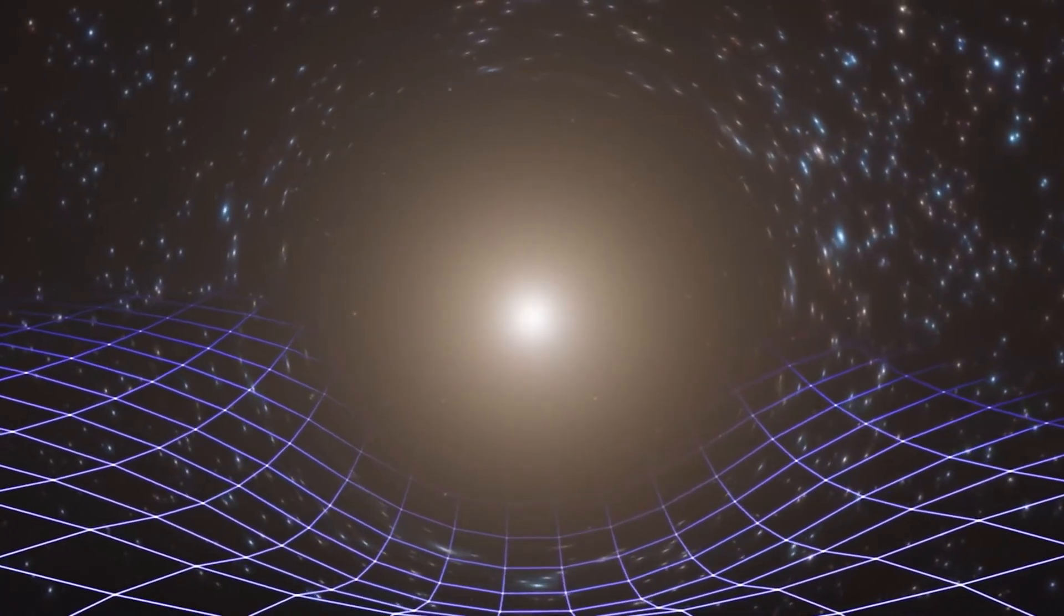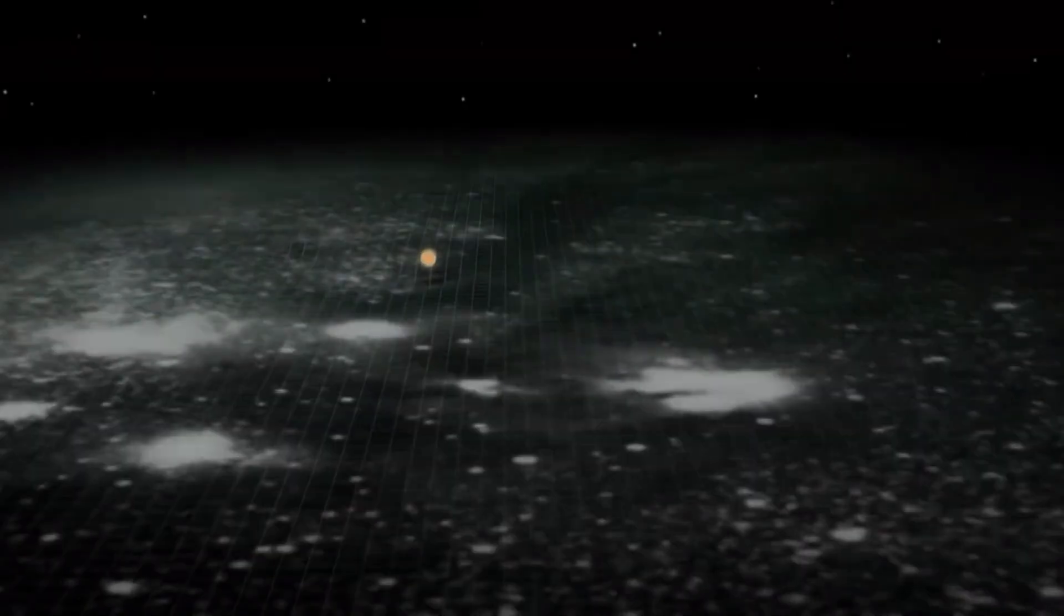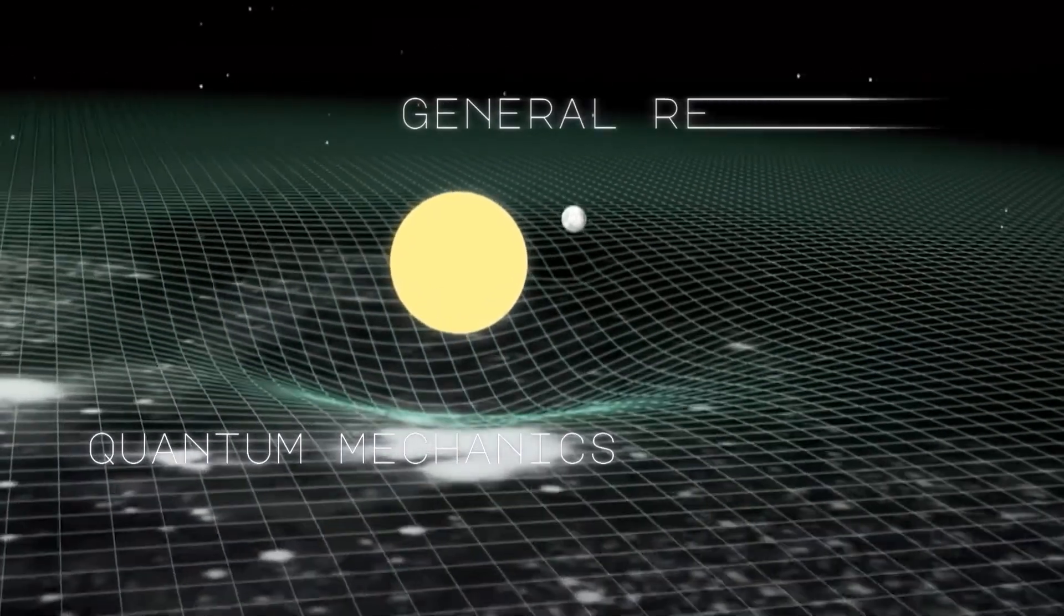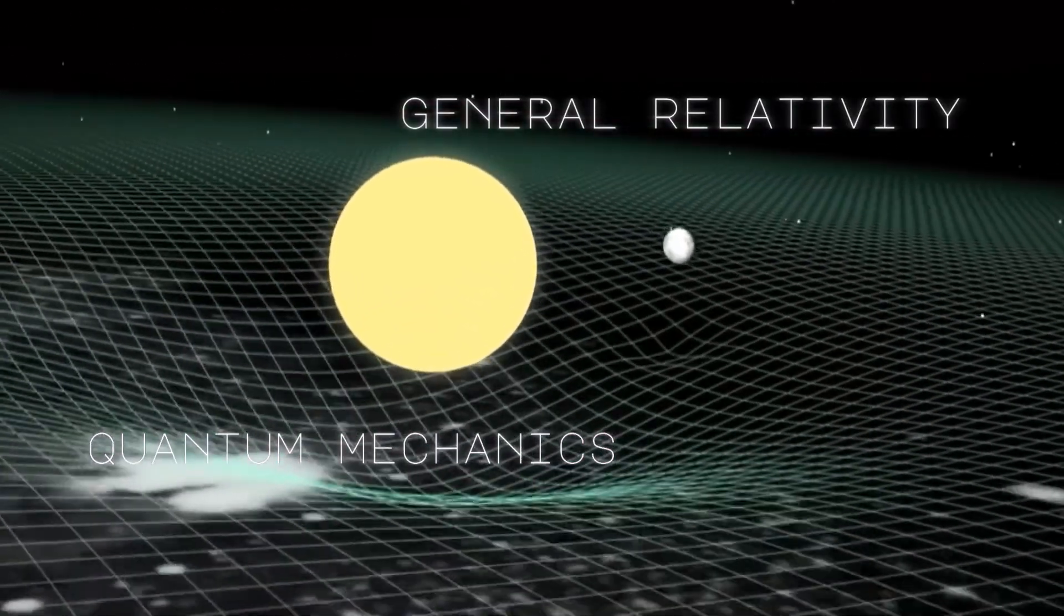Now let's tackle something that keeps theoretical physicists up at night. The Black Hole Information Paradox. This is where our two best theories of reality, quantum mechanics and general relativity, get into a fist fight.